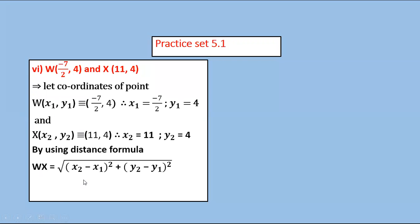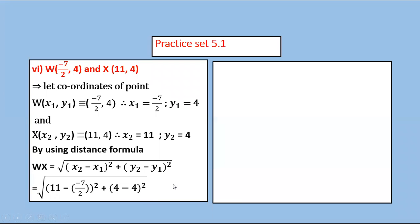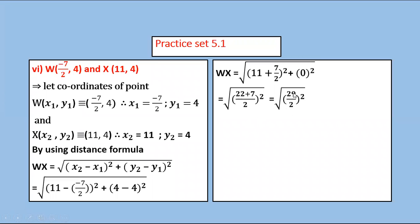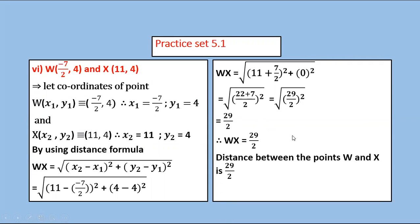Substitute the values: WX = √[(11−(−7/2))² + (4−4)²]. By cross multiplication: 11×2 = 22, so (22+7)/2 = 29/2. Taking square root, WX = 29/2. Therefore, distance between points W and X is 29/2.